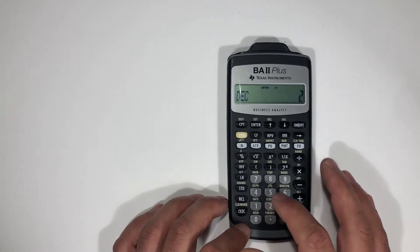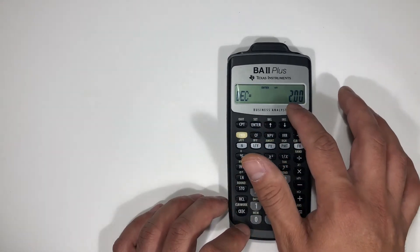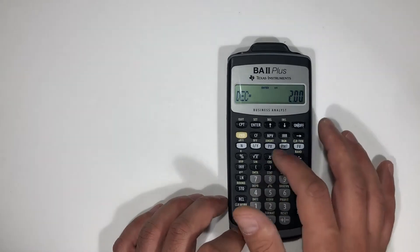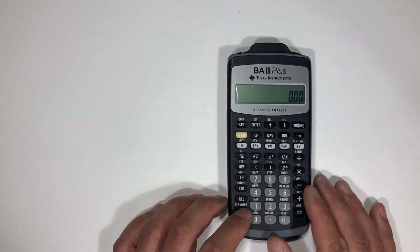2 enter. So now it's going to be set in two decimal places, second quit. So now you see it's set at two decimal places.